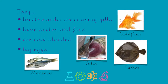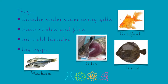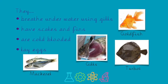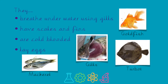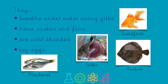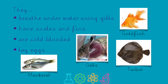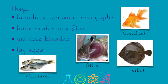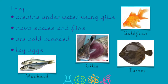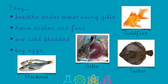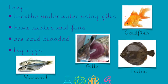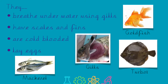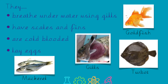Fish can breathe underwater because they have gills to help them do this. They have fins and scales, they lay eggs and they are cold-blooded. Some examples of fish are goldfish, turbot, a type of flatfish, carp, salmon and mackerel.